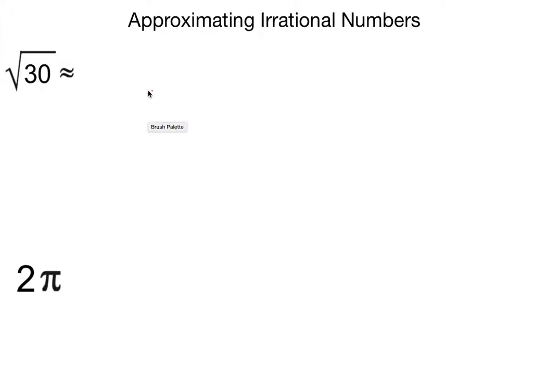In this video I'd like to go over how to approximate irrational numbers. We have the number here in the first example, the square root of 30, and the squiggly lines here mean approximately.